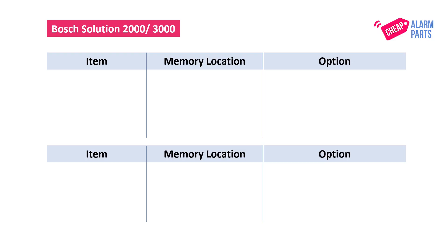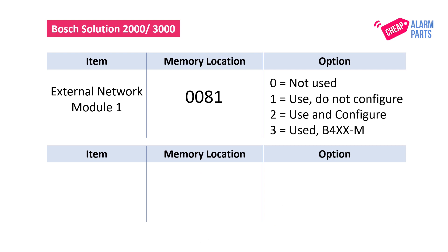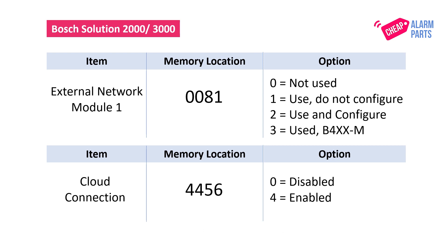We're going to be changing the following memory locations. The first item is external network module 1, which is in memory location 81, and we're going to be changing this to a 3, which is used B4XX-M. The second item is cloud connection, in memory location 4456, and we're going to change this to a 4, which is enabled.